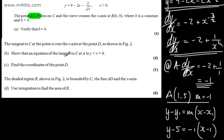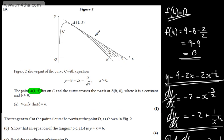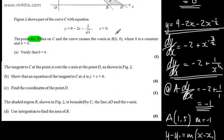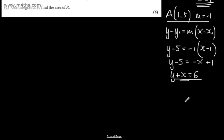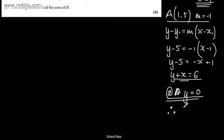In part C, we need to find the coordinates of point D. Point D is where the tangent line crosses the x-axis, so y equals 0 at D. Substituting y equals 0 into y plus x equals 6 gives x equals 6. So D has coordinates 6 comma 0.